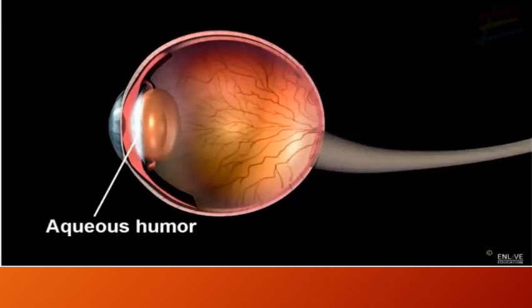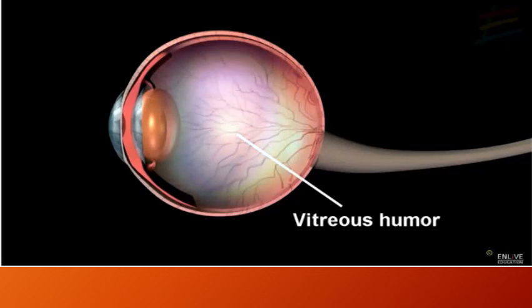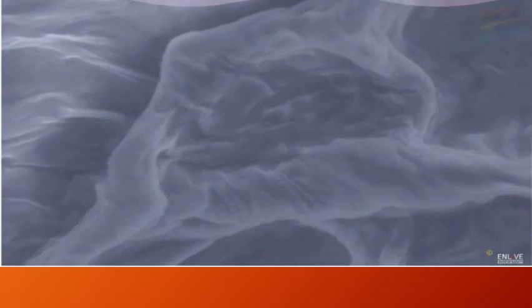Between the lens and the cornea is the aqueous humor, consisting mostly of water and a little salt. The largest space within the eye is filled with vitreous humor, consisting chiefly of water mixed with salt and albumin. It is a highly transparent, jelly-like substance and plays a very important role in visual adjustment.